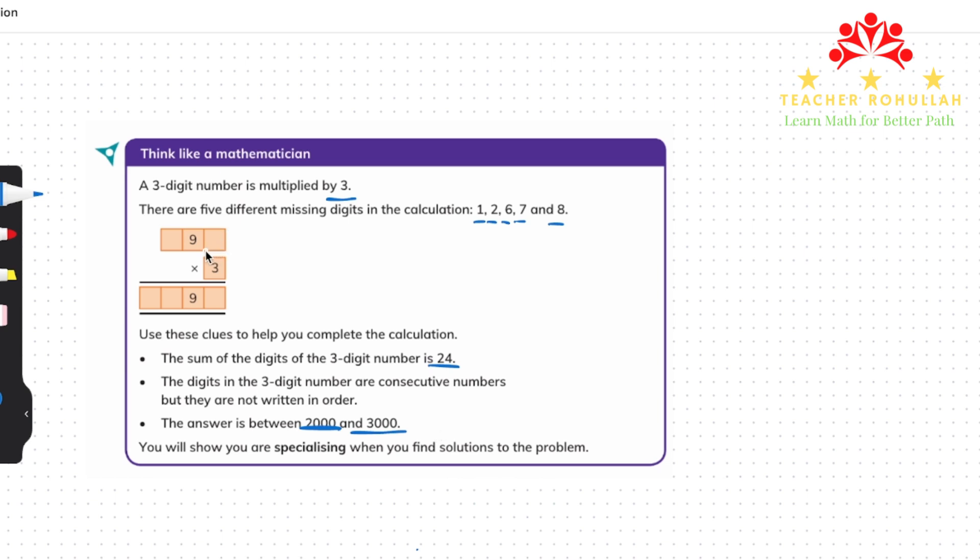Because it says the numbers are consecutive numbers, so one of the numbers in the three-digit number is given and that's 9. So the other two numbers can be 7 and 8 because we are having the numbers which are around 9. Let's see if they add up to 24 or not. So 7 plus 8 is 15 and 15 plus 9 is 24. So one of the conditions is fulfilled.